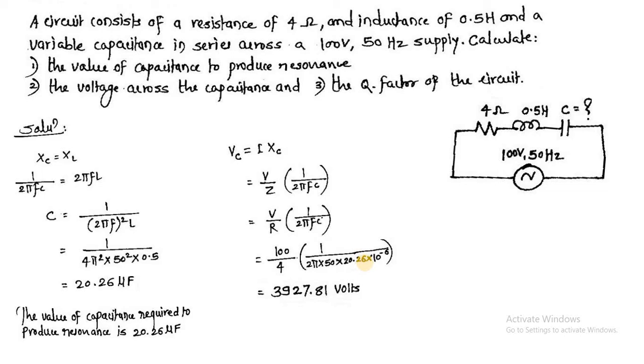Now the third factor is quality factor. I have given you the formula of quality factor. You can either take VC upon V, you can take VL upon V, or you can take 1 upon R into under root L by C. It is very simple to calculate by taking the ratio VC upon V.